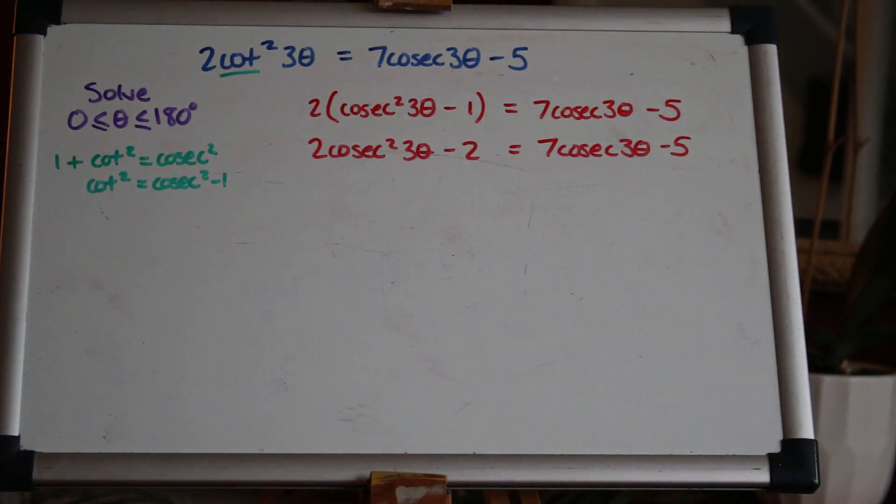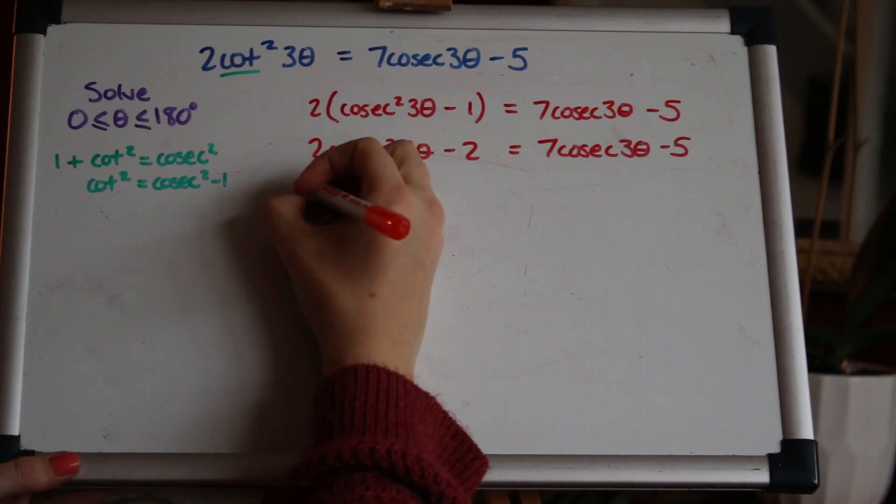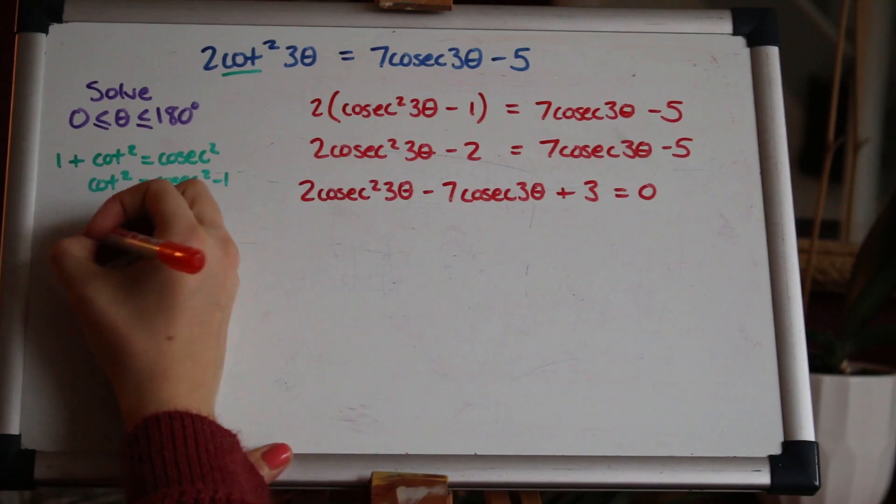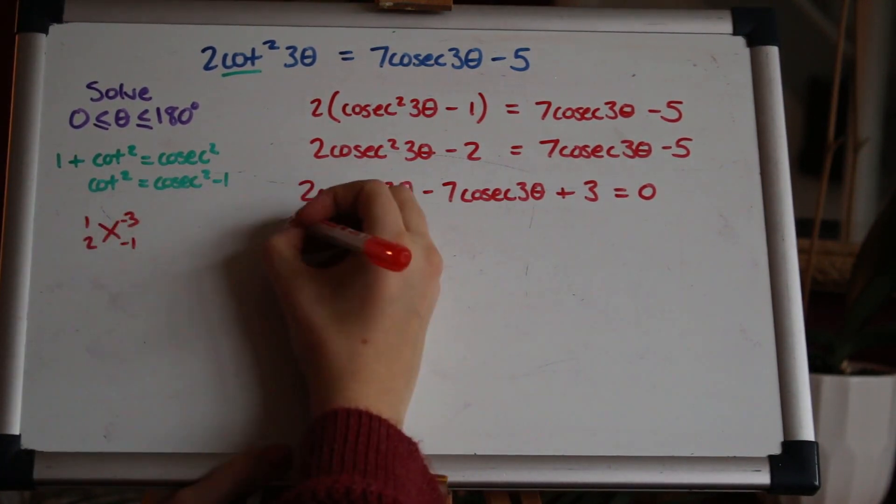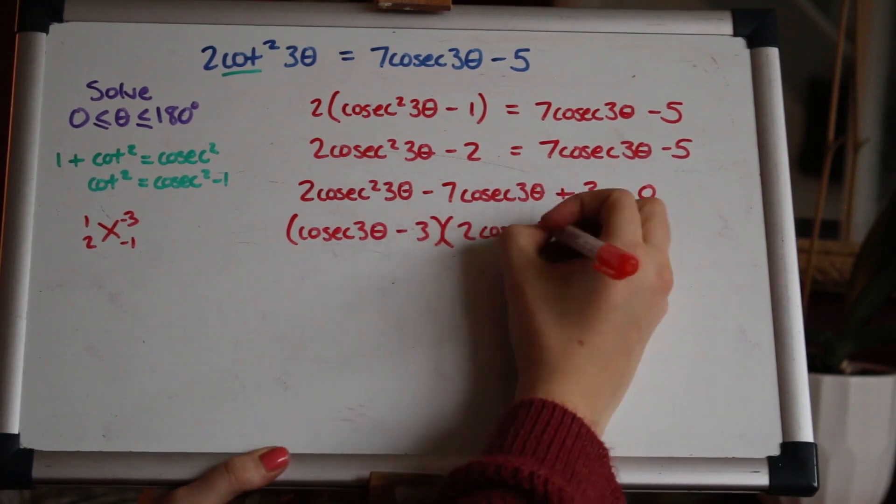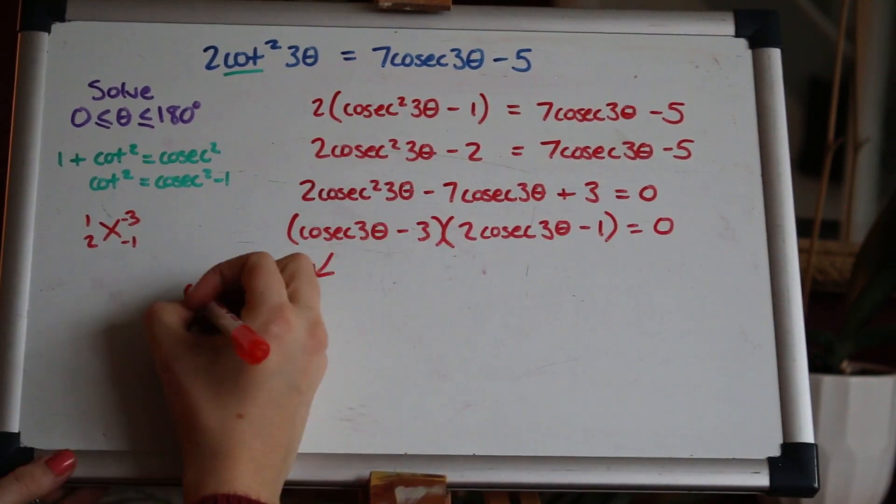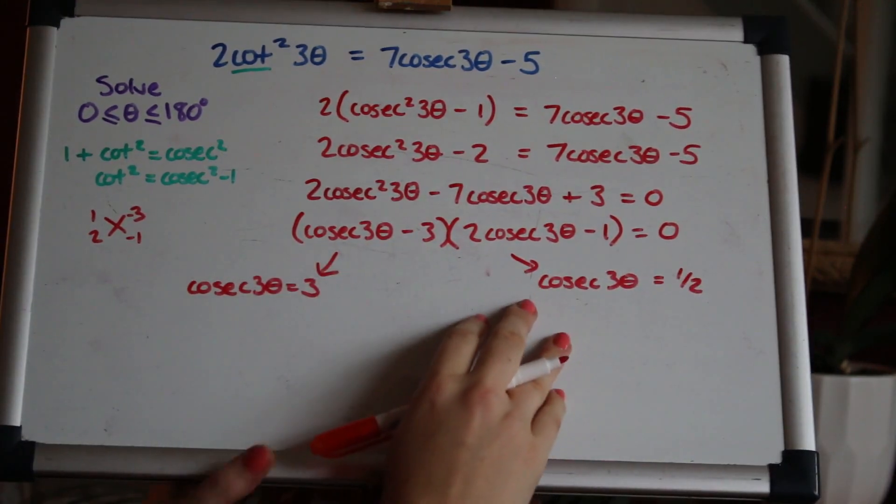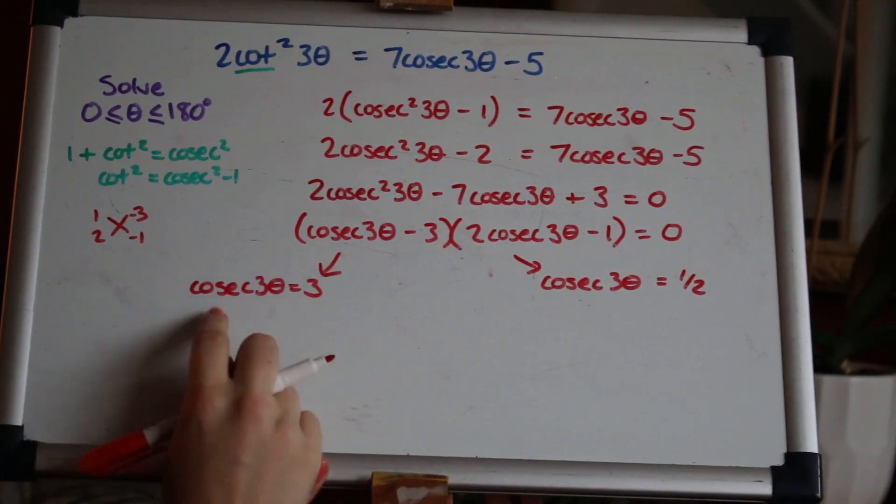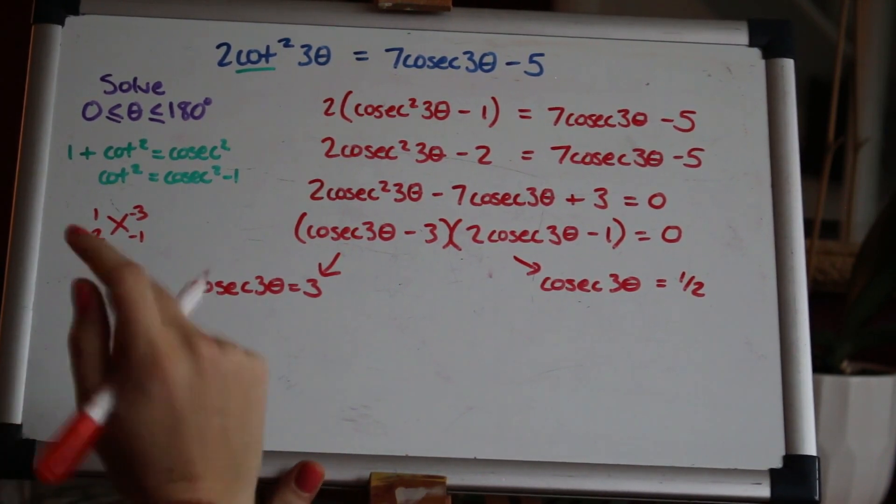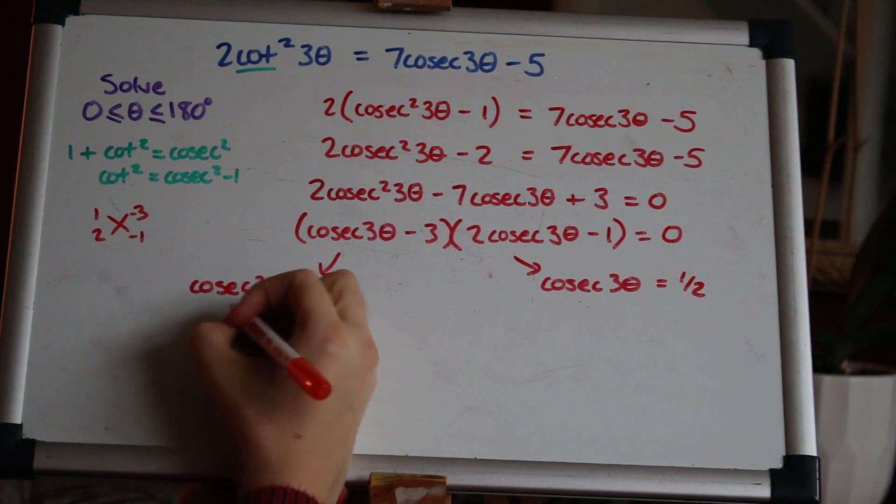Again this looks like a quadratic equation so I'm going to rearrange and solve that: 2(cosec²3θ - 1) = 7cosec3θ - 5, which gives us 2cosec²3θ - 7cosec3θ + 3 = 0. Factorising: (cosec3θ - 3)(2cosec3θ - 1) = 0. Again I've got two sets of solutions going on here and cosec is the reciprocal of sine so I'm going to flip these over again like I did in the last question.